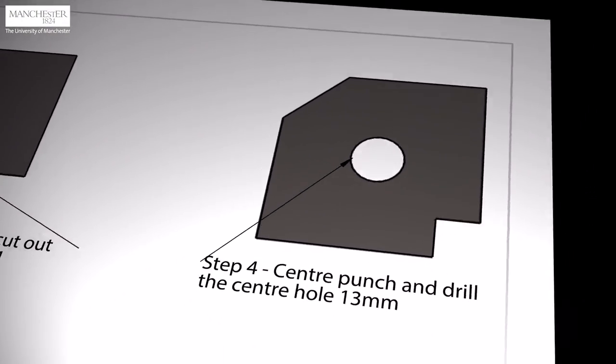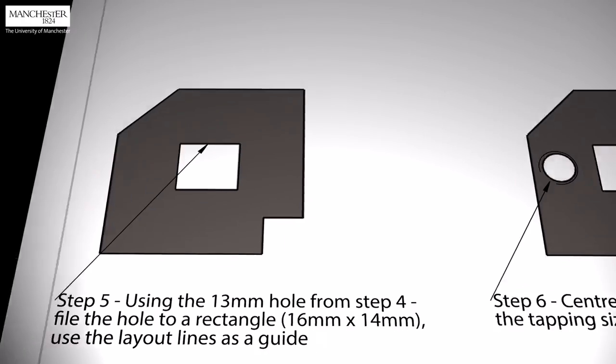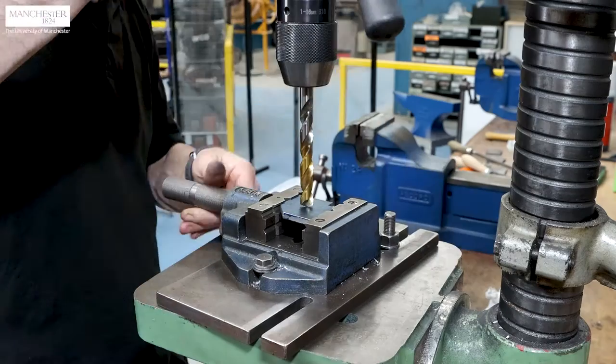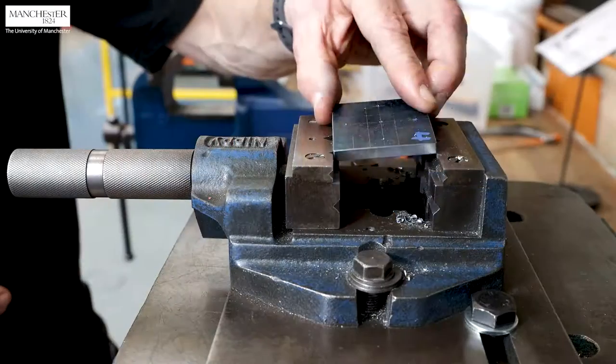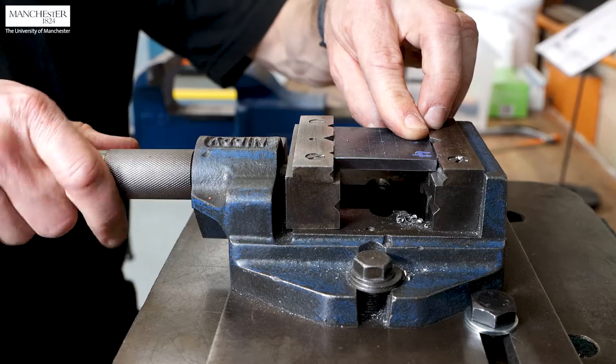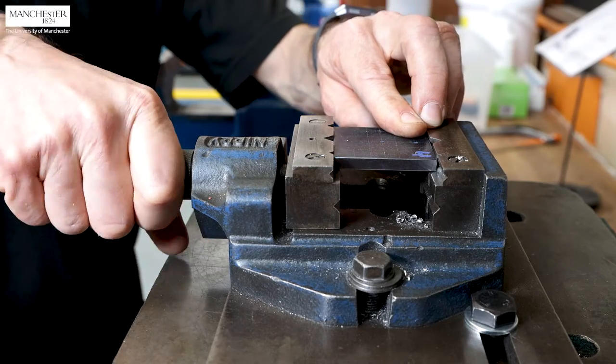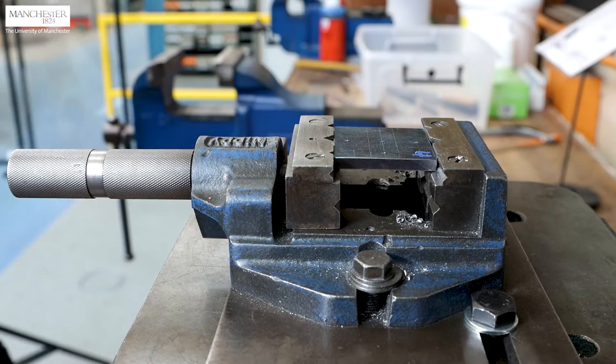Next, we'll see how to produce the rectangular hole. We will first drill a central hole using a mark for the centre of the material. Install the workpiece on the portable vise. For safety, remember to clamp the vise to the drill table.